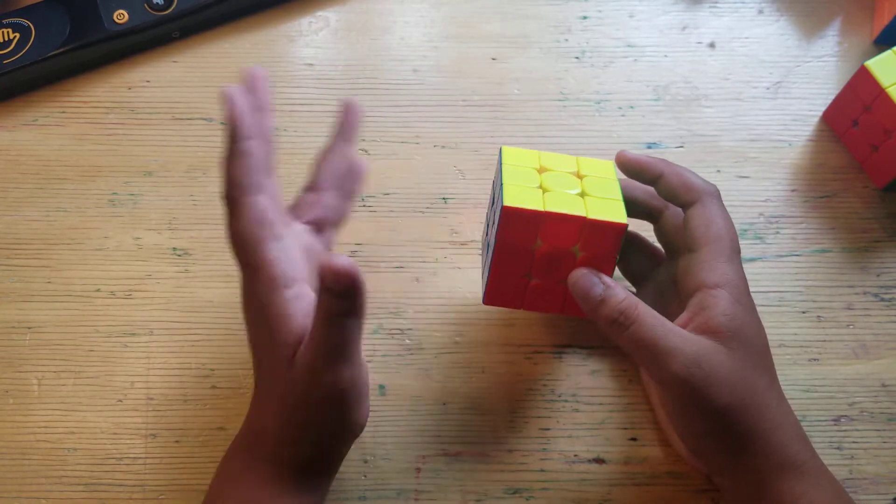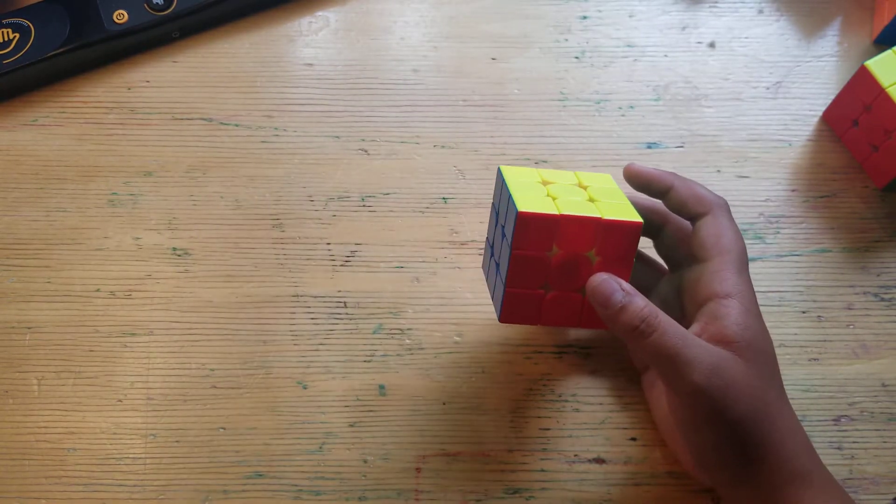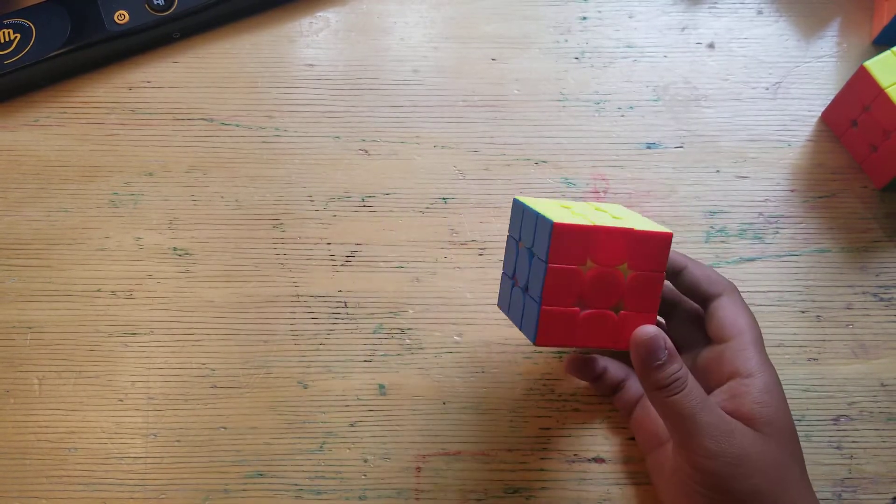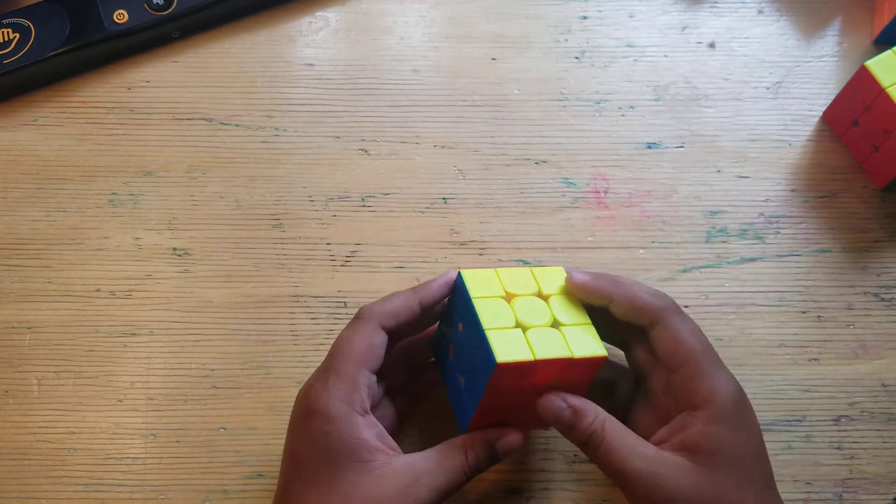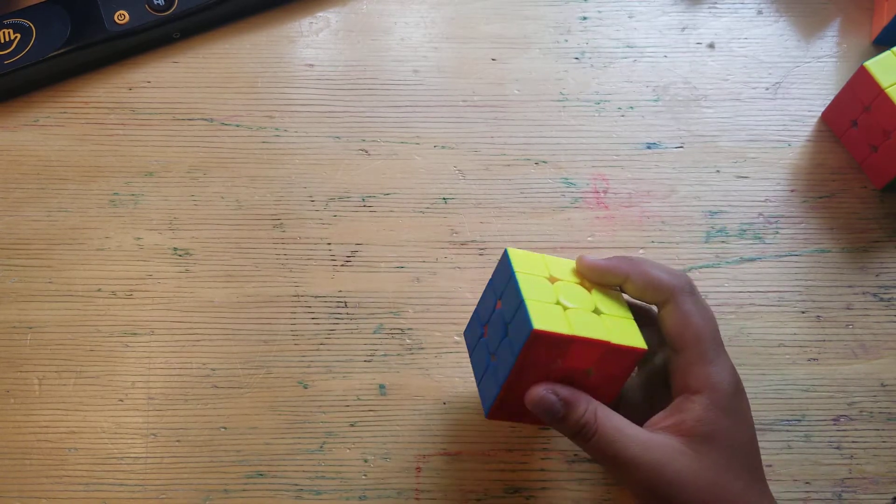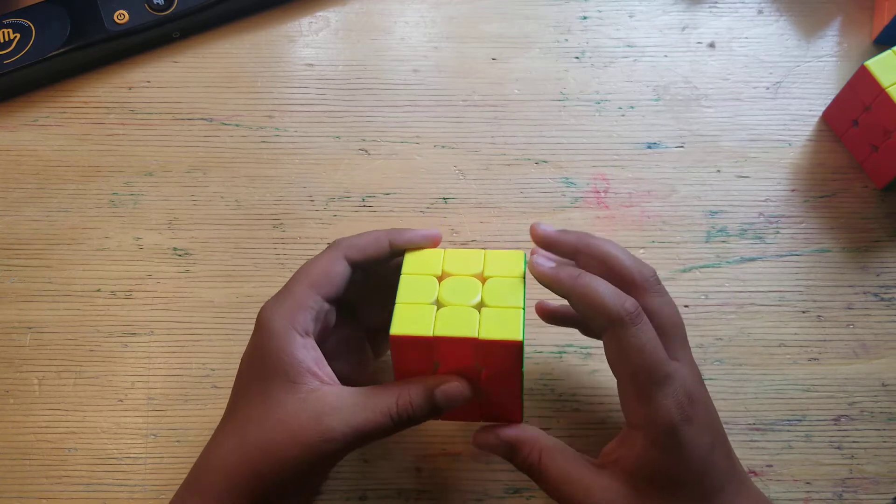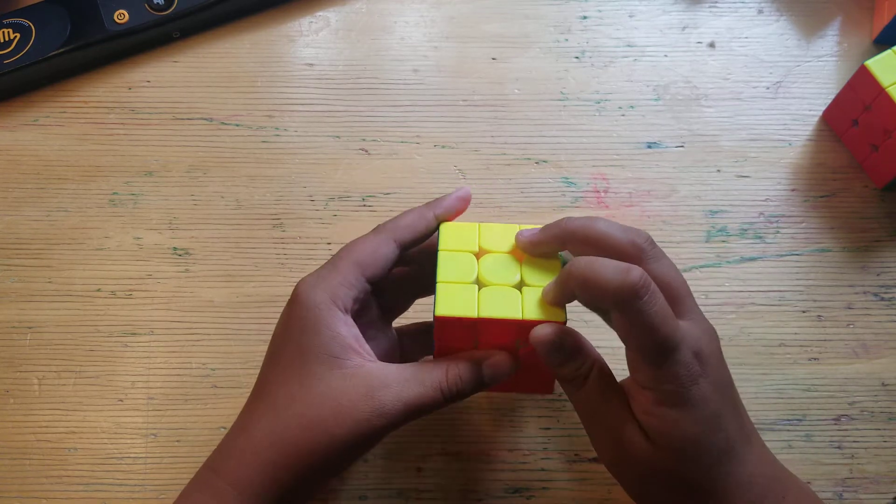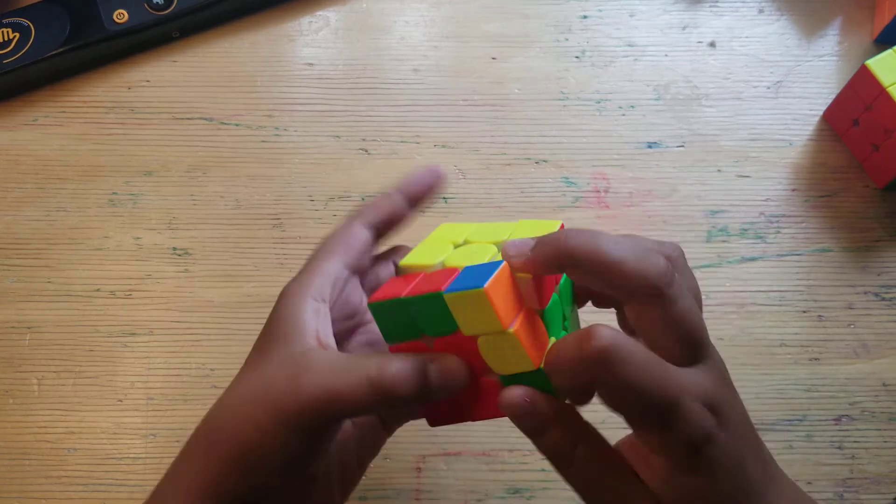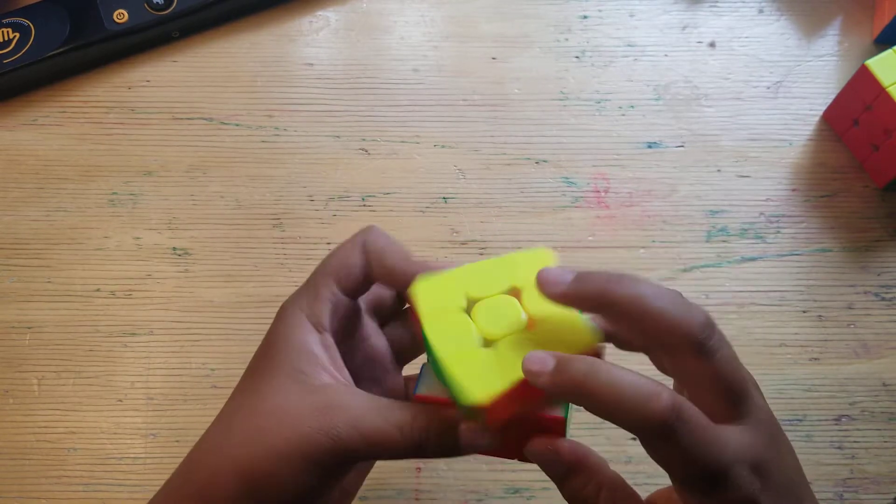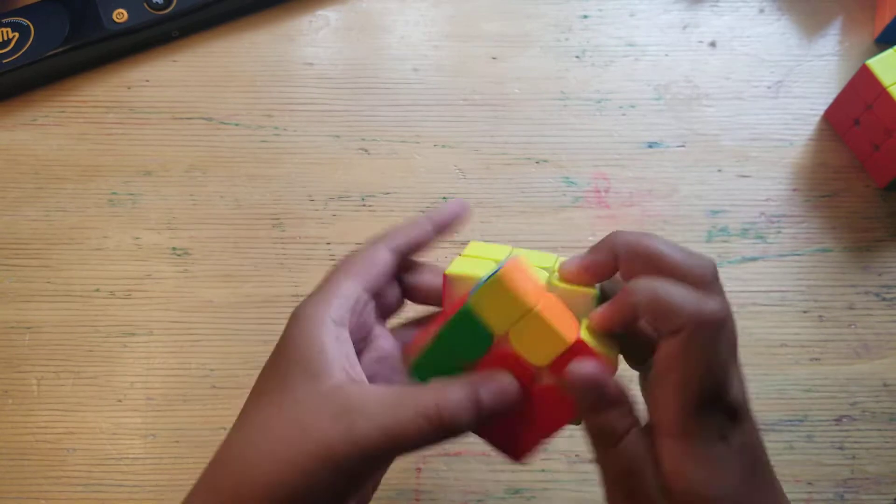It's really cool. You want to see two cubes that are really similar, like the Gan 356 XS is just the same cube as the 356M, but they just made the magnets not adjustable. Let's do some first turns. Oh yeah, feels exactly the same as the 11 M Pro. That's what I wanted.